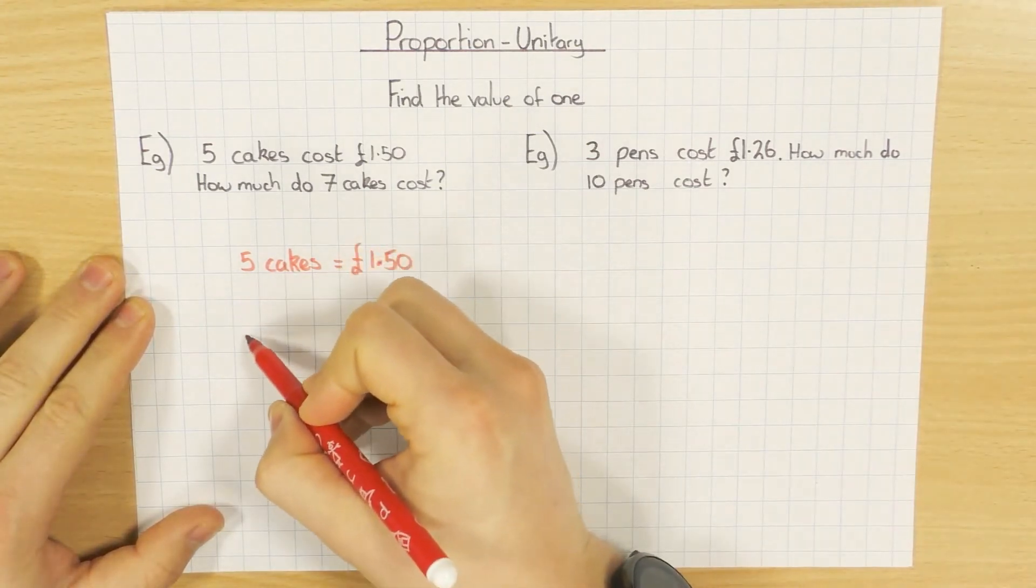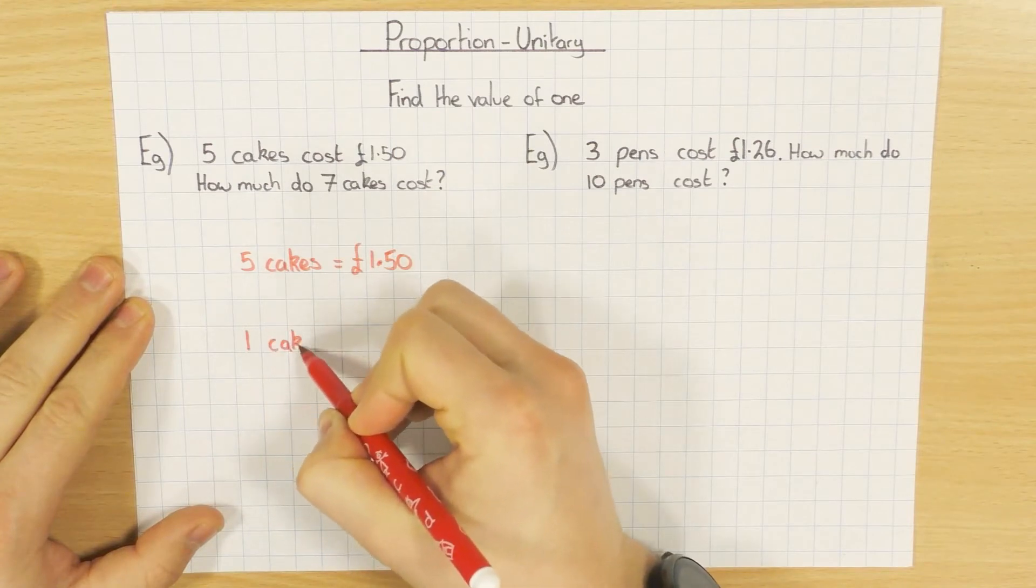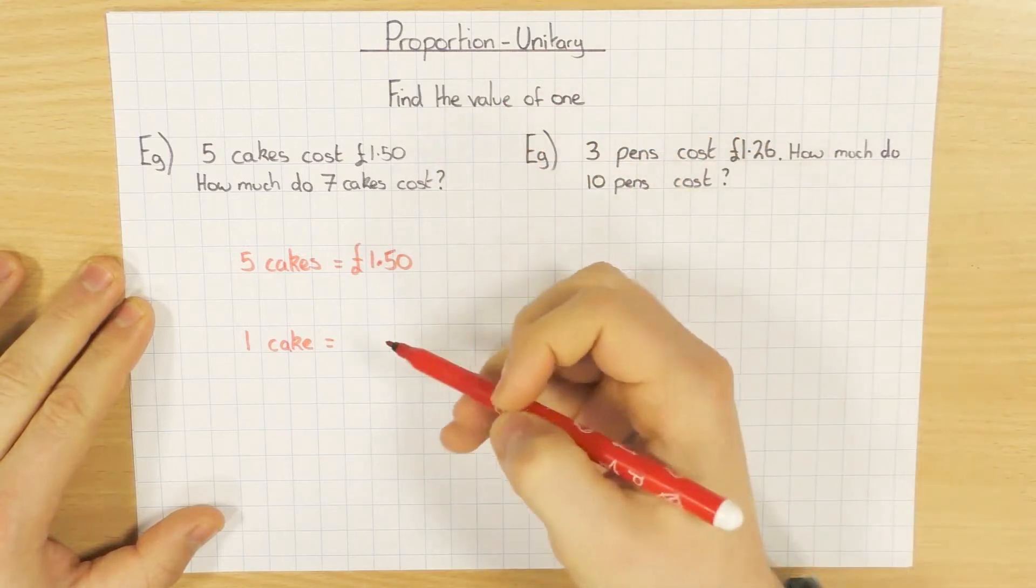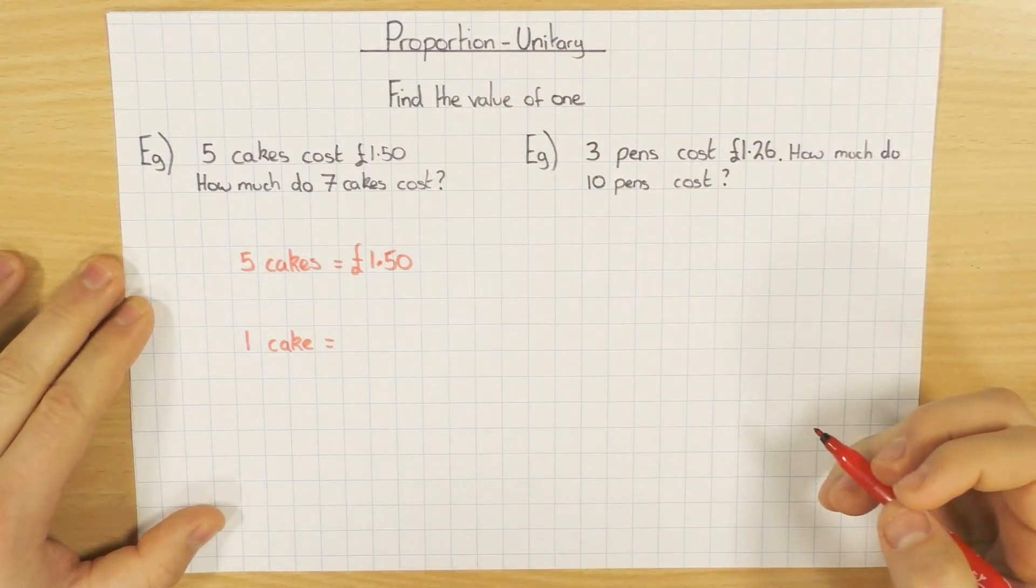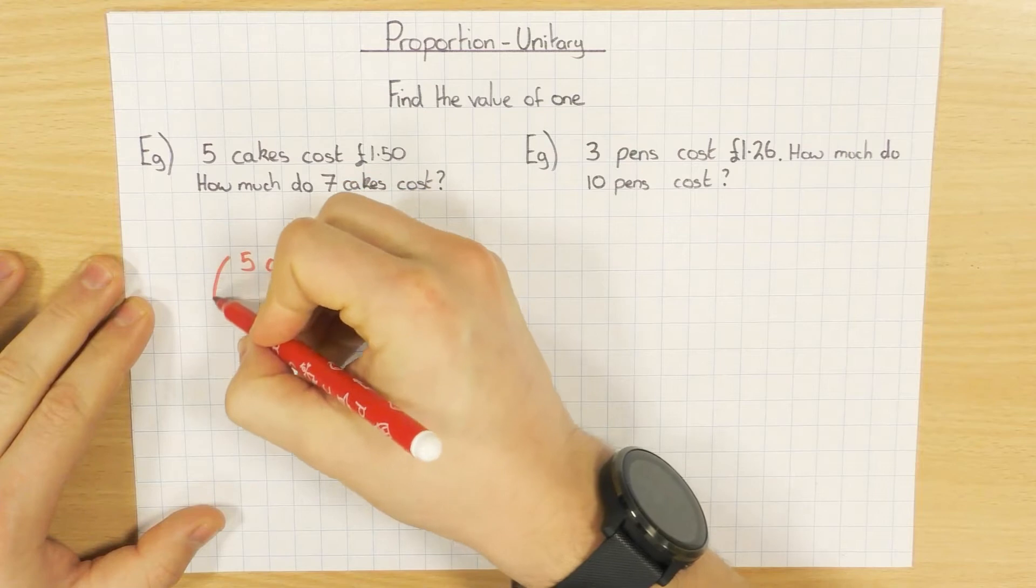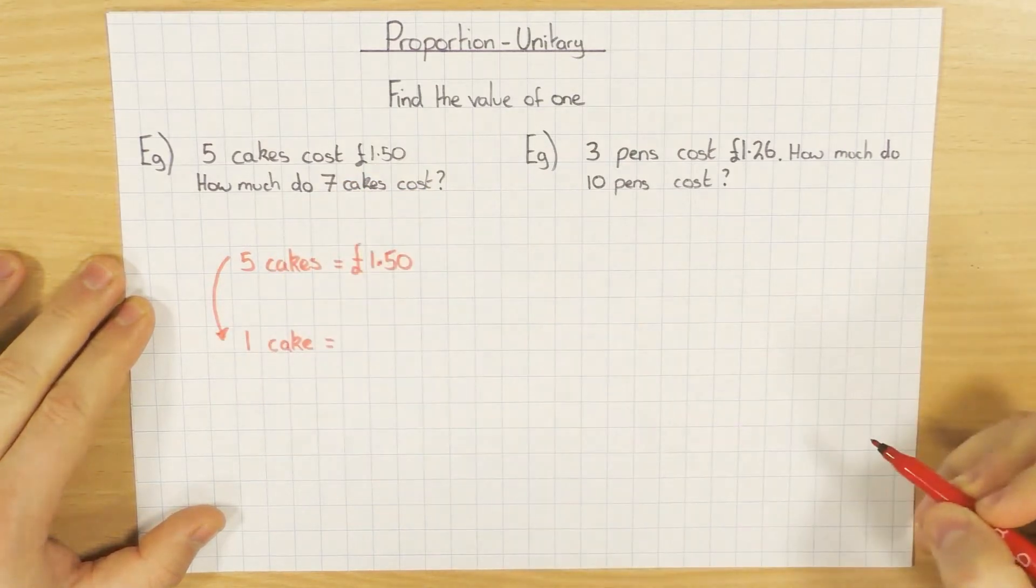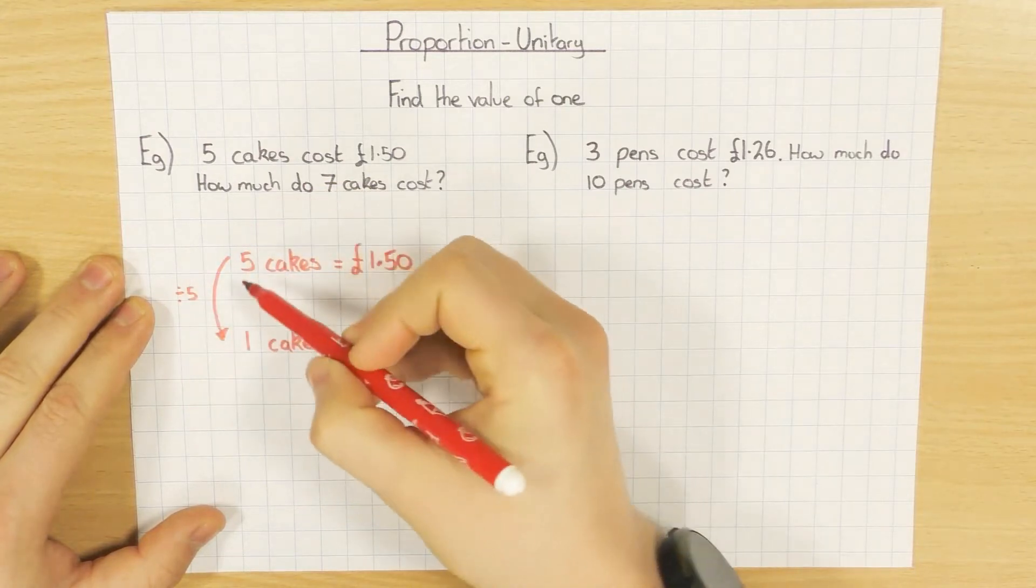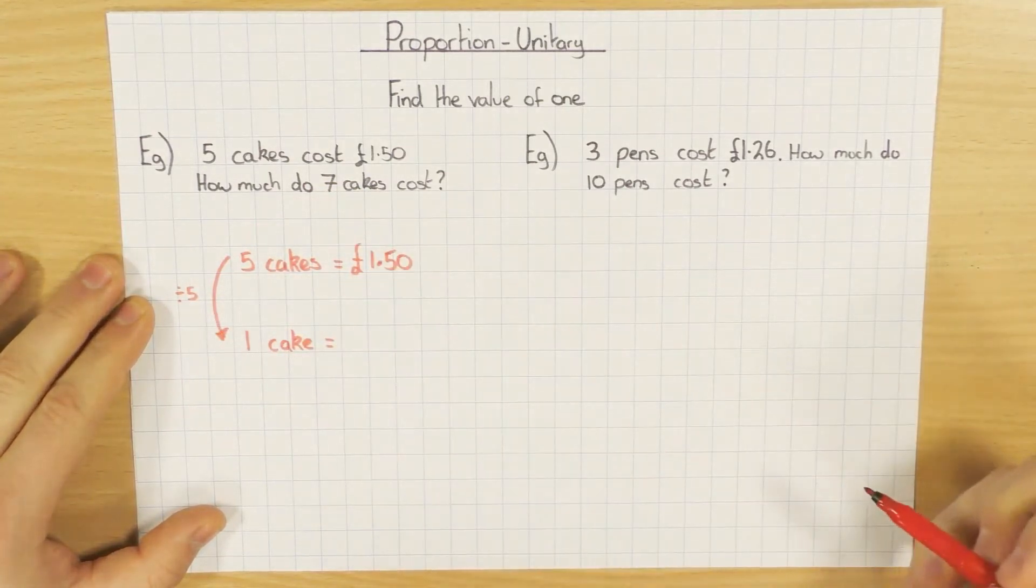So the best thing to do is to find out the value of 1 cake. So this is the unitary idea, to find out the value of 1. And once you know the value of 1, you can find out the value of anything. So how do I go from 5 to 1? Well, if you divide it by itself, so divide by 5, 5 divided by 5, you get 1.